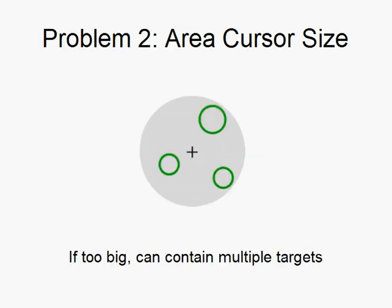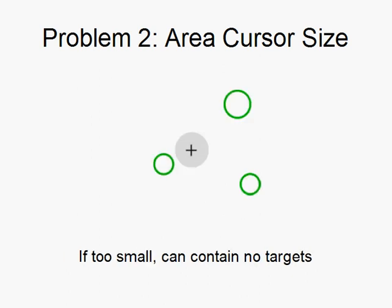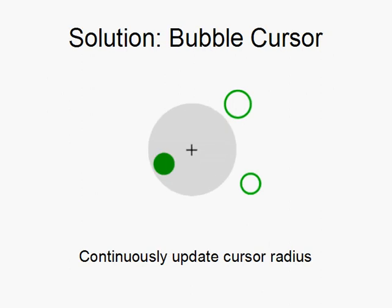The second problem is the size of the cursor. If too large, multiple targets will be in its bounds. If too small, the area cursor may not capture any targets. Our solution is to continuously update the size of the cursor so that there is always exactly one target within its bounds.